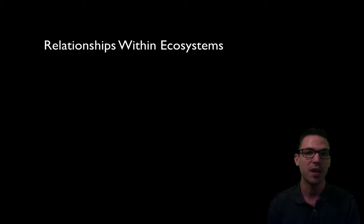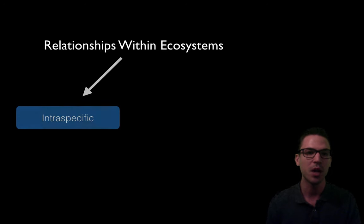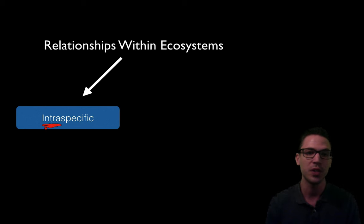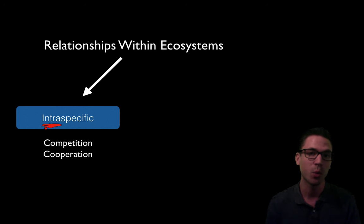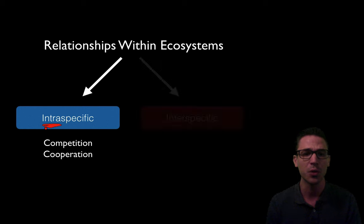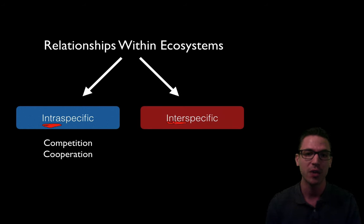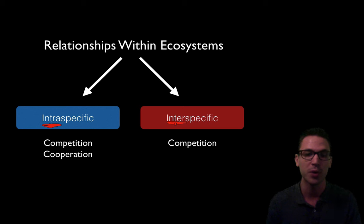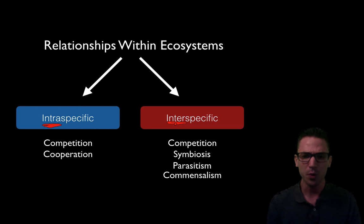Now that we understand how ecosystems are built, let's briefly look at some of the relationships formed within them. There are two types. Intra-specific relationships — the prefix intra meaning inside — are relationships within one species, for example competition over food or mates, or cooperation for the benefit of a colony. Inter-specific relationships — inter meaning between — form between two different species. Examples include competition over similar niches, as well as symbiosis, parasitism, and commensalism. We'll focus on symbiosis and parasitism.